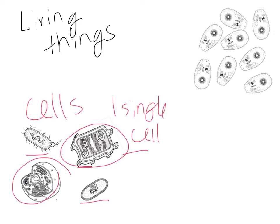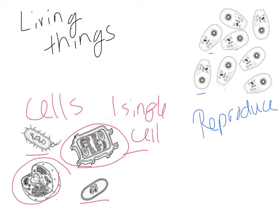All living things have the capability to reproduce. That was one of the reasons we considered a virus a non-living thing — viruses can't reproduce without a host cell. Bacterial cells can: prokaryotes can reproduce via binary fission, and eukaryotic cells can reproduce via mitosis. So all living cells have the ability to reproduce.